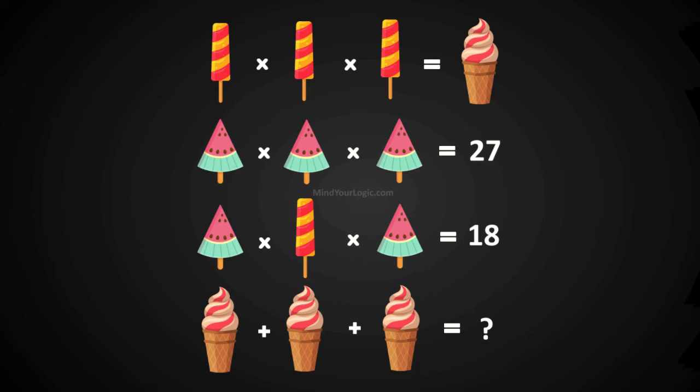Here is a viral math equation puzzle, in which ice creams and watermelon are positioned in such a way that they represent an equation. You need to understand the equations and find the correct value for them.